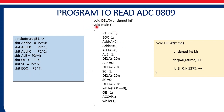We start the main program by configuring port 1 and EOC as input port and input pin. Port 1 is configured as input port. Then ADDRA equal to 0, ADDRB equal to 0, ADDRC equal to 0 — these three lines will select channel 0 of the ADC 0809.